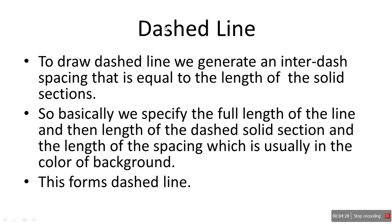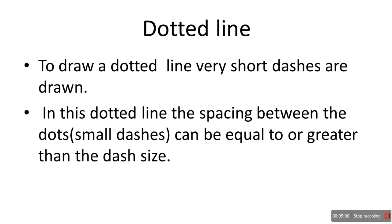To draw a dashed line, we generate an inter-dashed spacing equal to the length of the solid sections. You draw a line of certain length, then provide a spacing, then draw the line again — repeating this pattern. You specify the full length of the line, the length of the dashed solid section, and the length of the spacing, and then the whole dashed line is drawn.